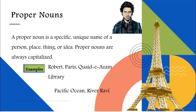Do you see how these words are different? Robert is the name of a specific person, Paris names a specific city, and Kaidiazm Library is the name of a particular library. Sometimes proper nouns consist of two or more words, such as Kaidiazm Library, Pacific Ocean, River Ravi, etc. In this case, all important words are capitalized as the whole name is considered to be one noun.